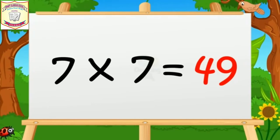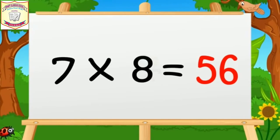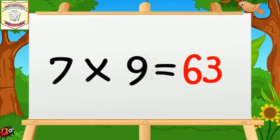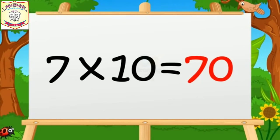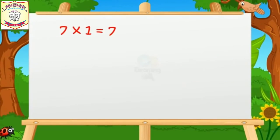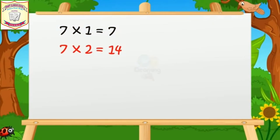Seven sevens are forty-nine. Seven eights are fifty-six. Seven nines are sixty-three. Seven tens are seventy. Seven ones are seven. Seven twos are fourteen.